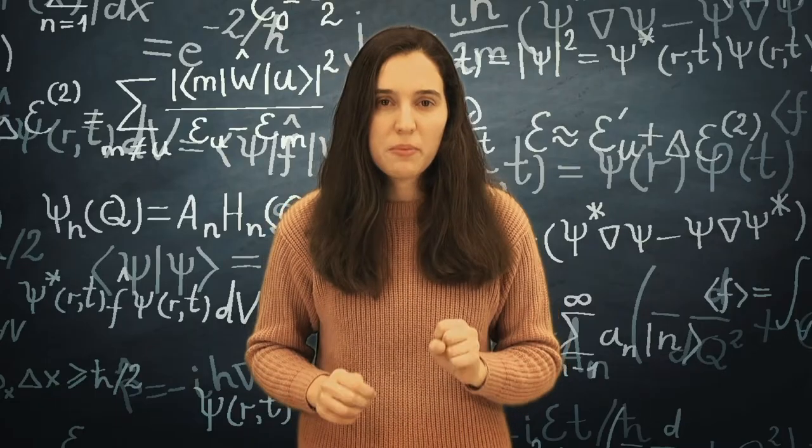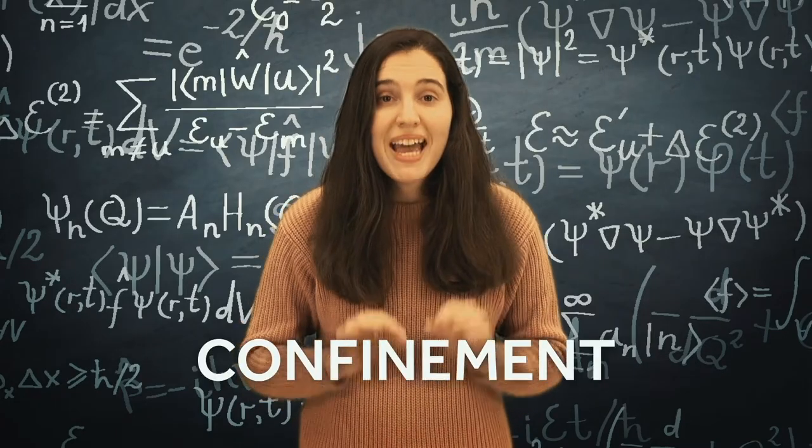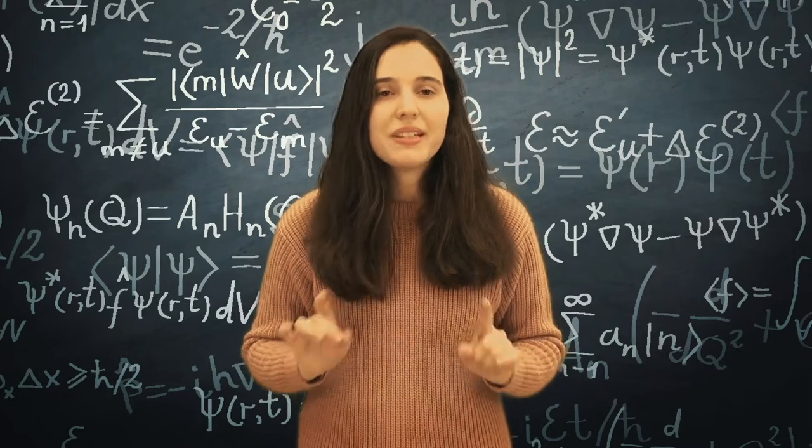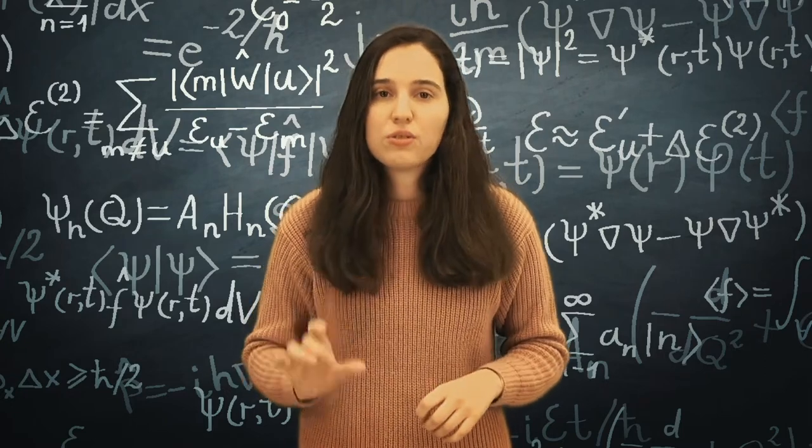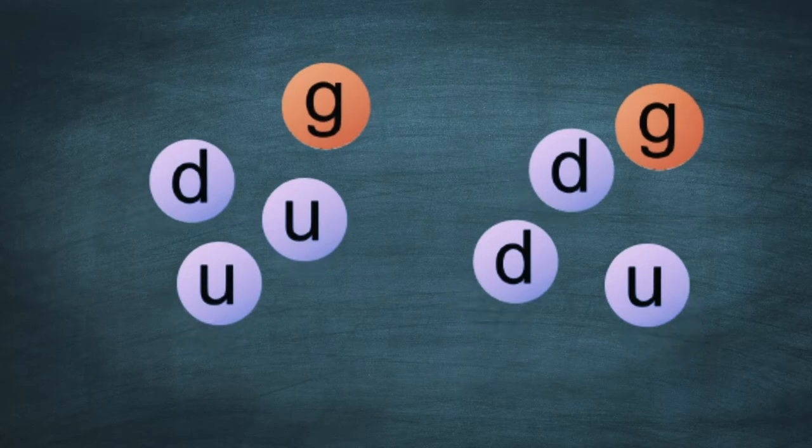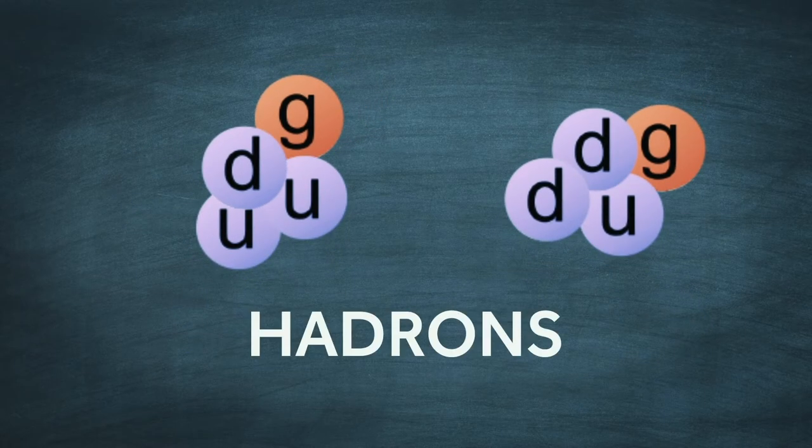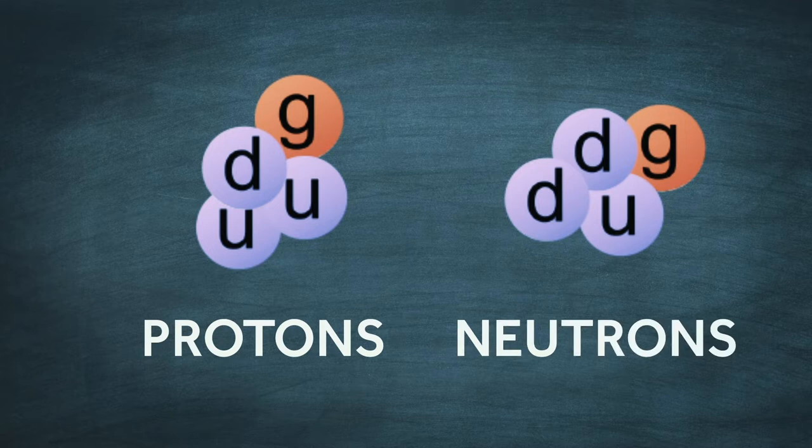Now an important concept comes into play, confinement. At normal energies, experimenters never observe quarks and gluons by themselves. They exist in bound states that we call hadrons. Certainly you have heard about protons and neutrons. These are two examples of hadrons.